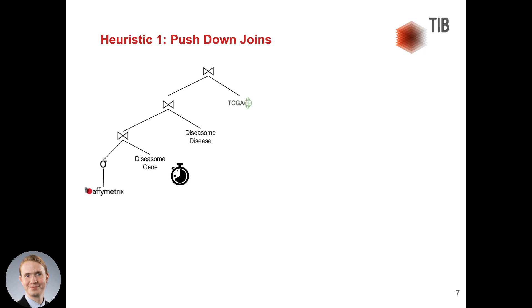And actually, the join attribute is indexed. So we can reduce the query plan and have Diseasome as one single leaf. This is way faster.